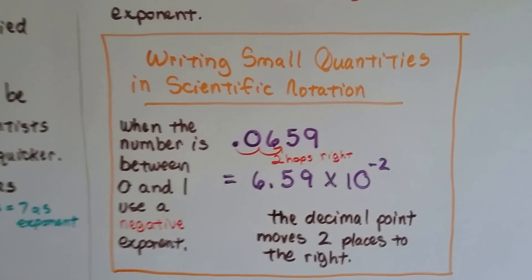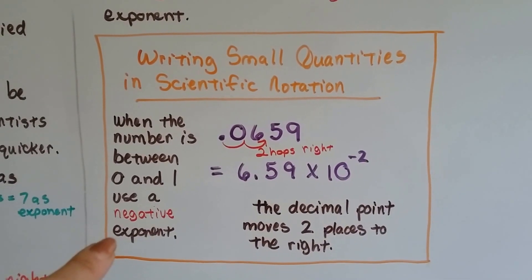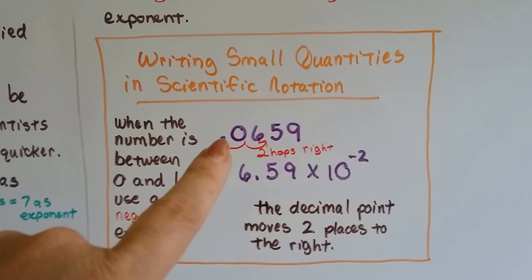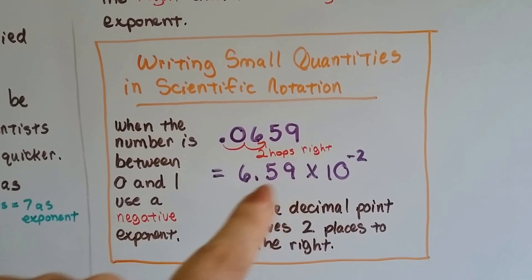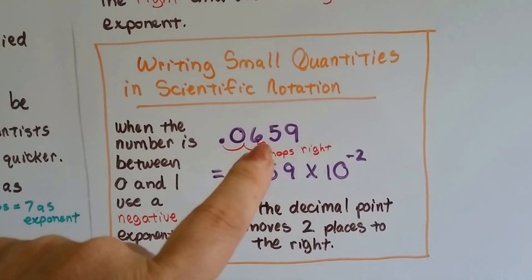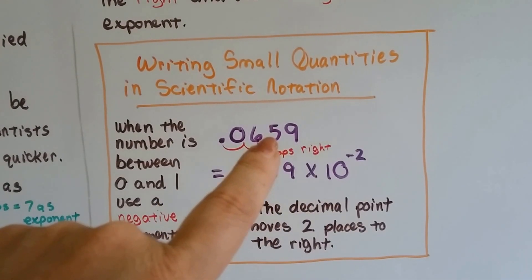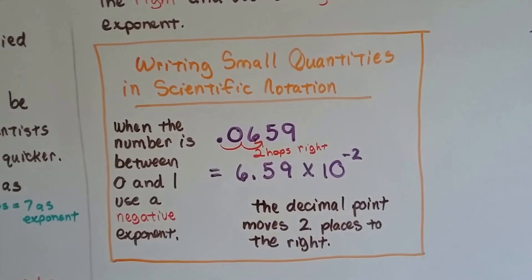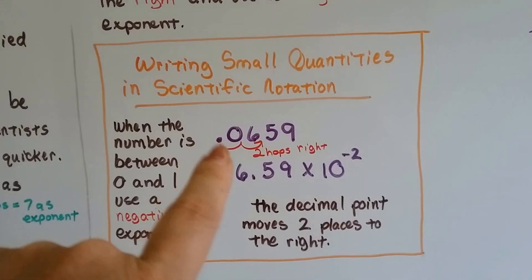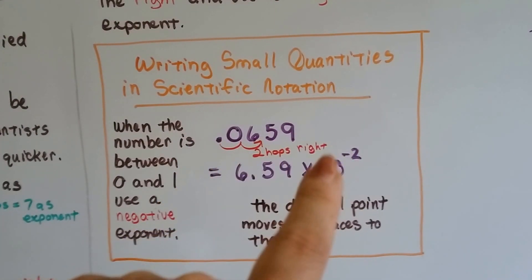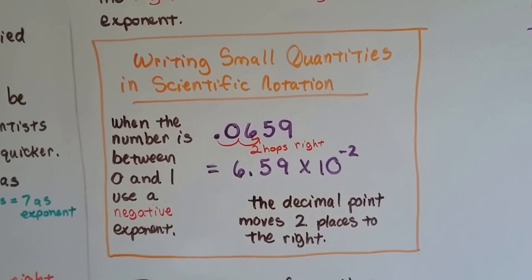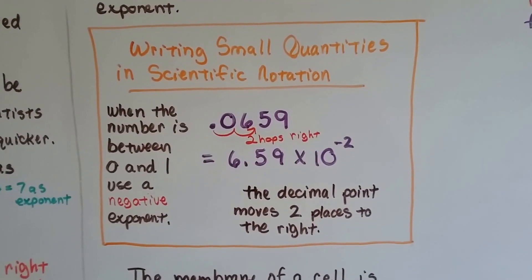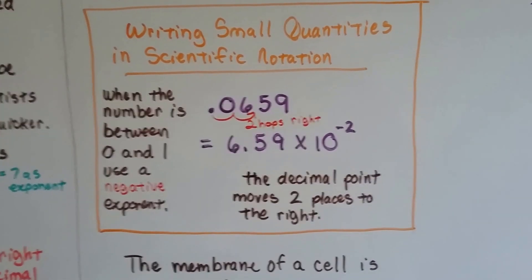When the number is between zero and one, we use a negative exponent. So 0.0659 — we're going to move it over two hops so that we have one digit in front of the decimal point. Two hops to the right means a negative two exponent. We have 6.59 times ten to the negative two. The decimal point moves two places to the right.